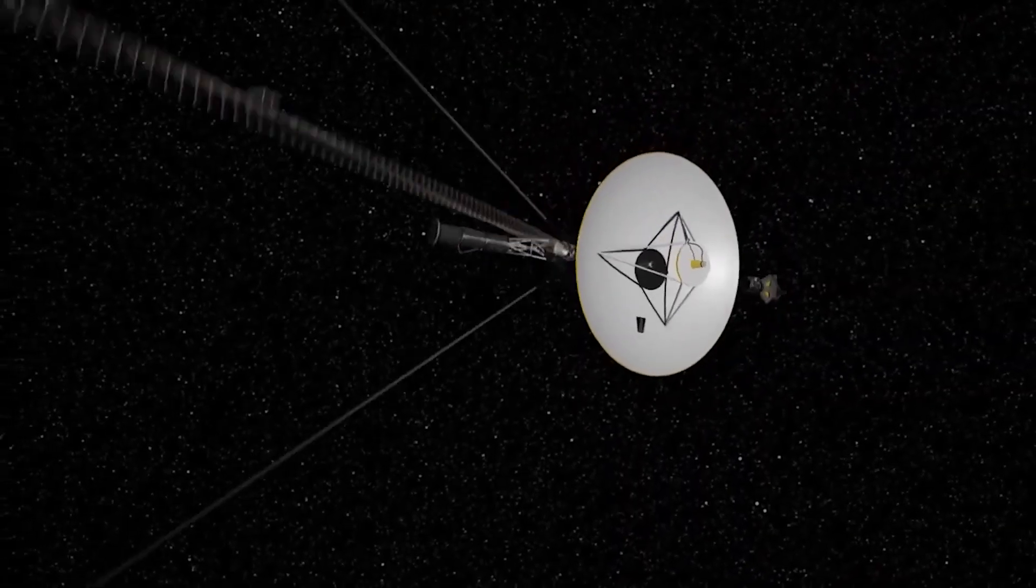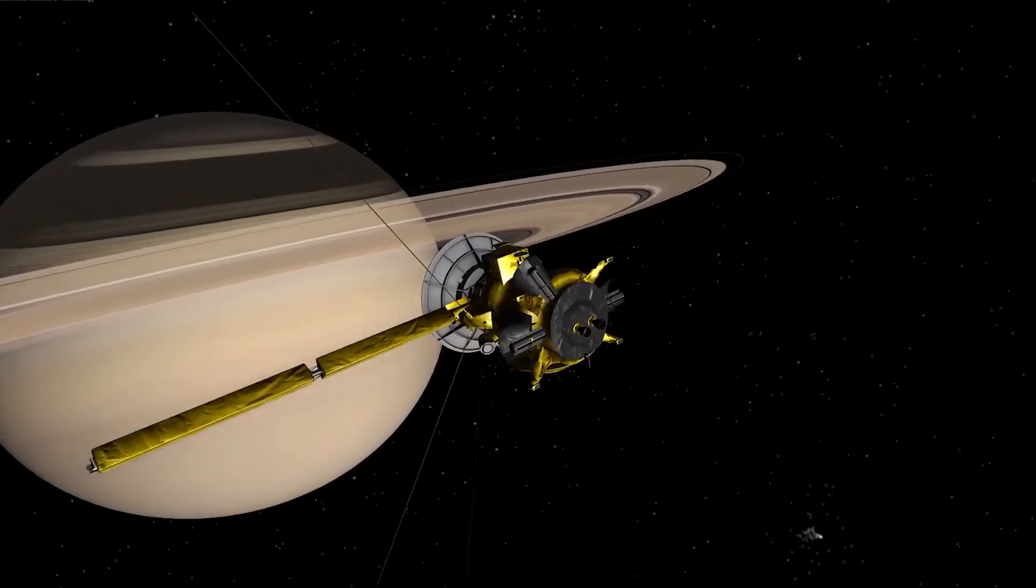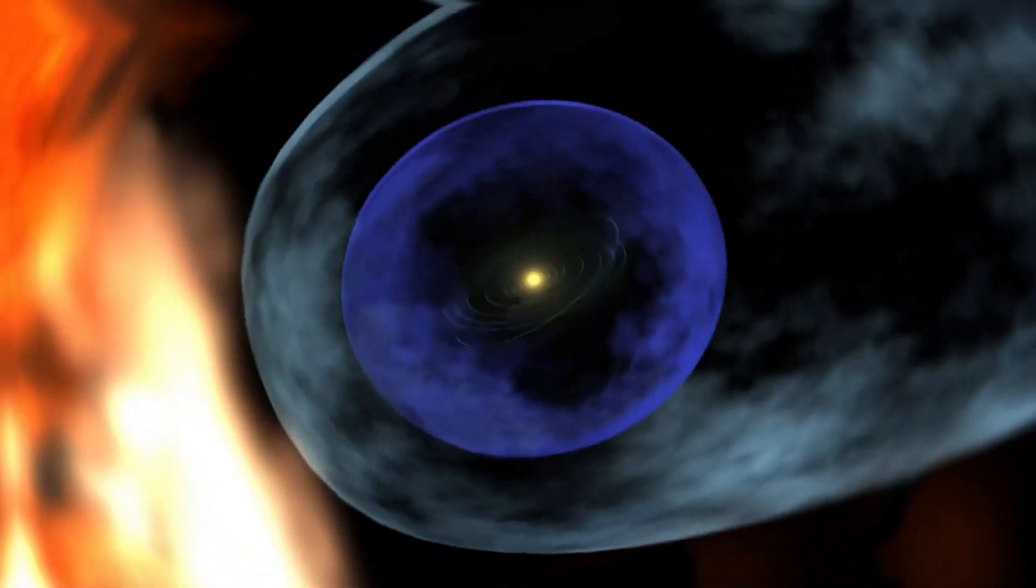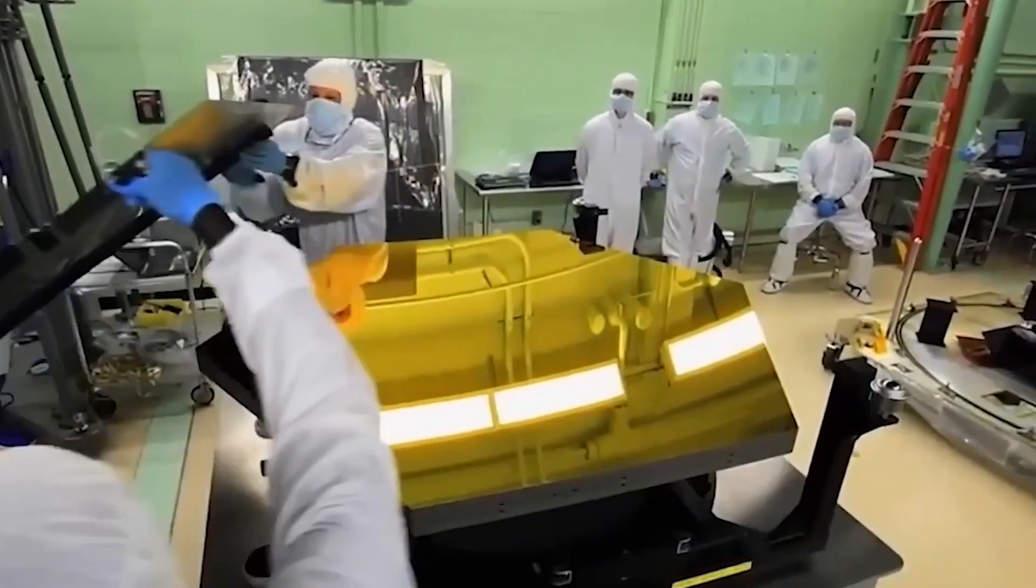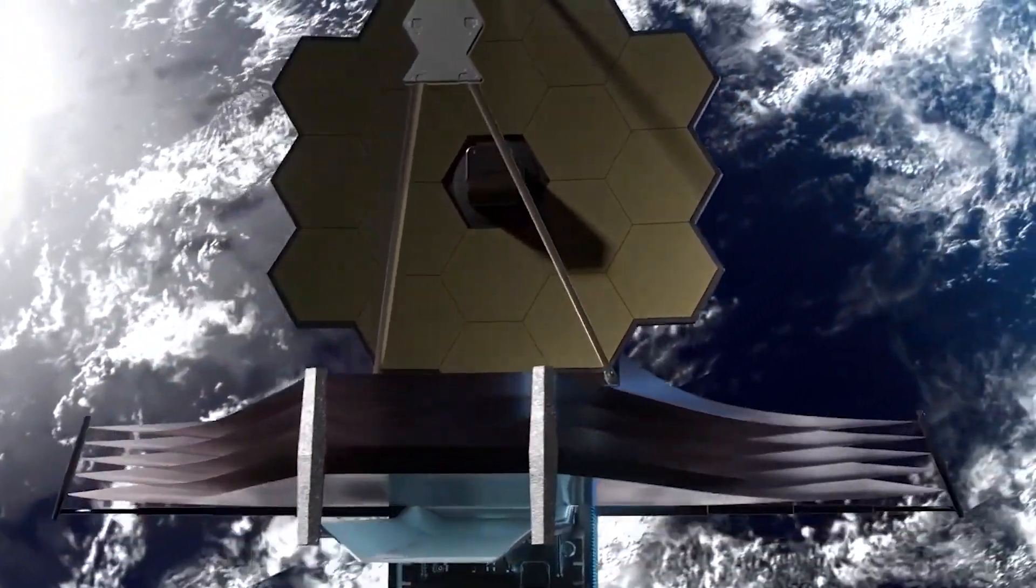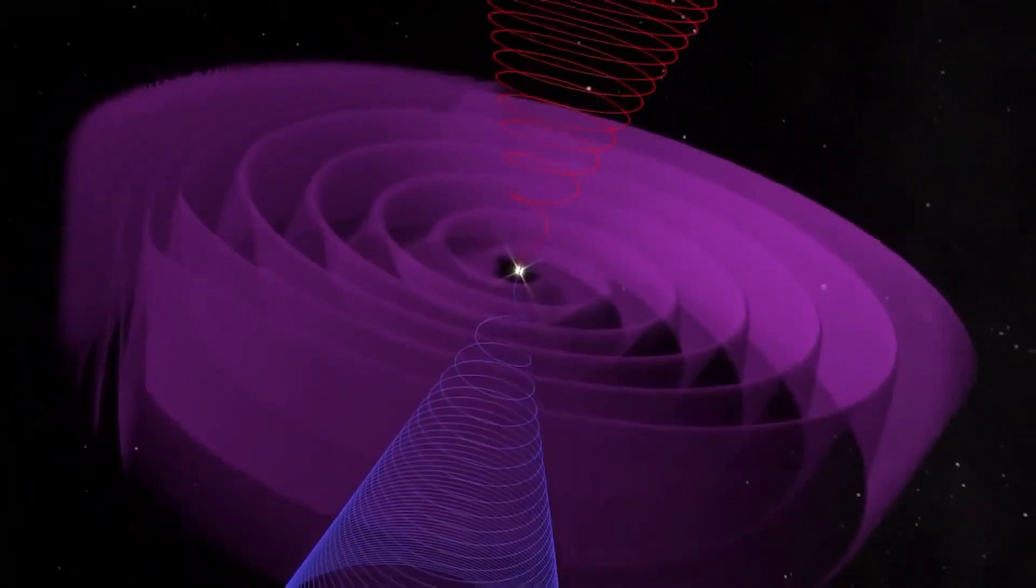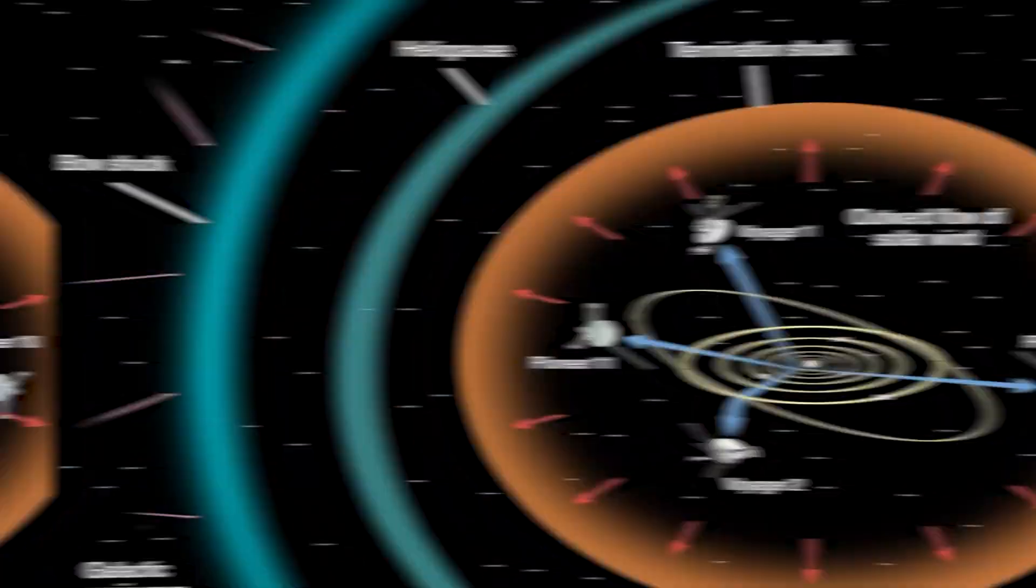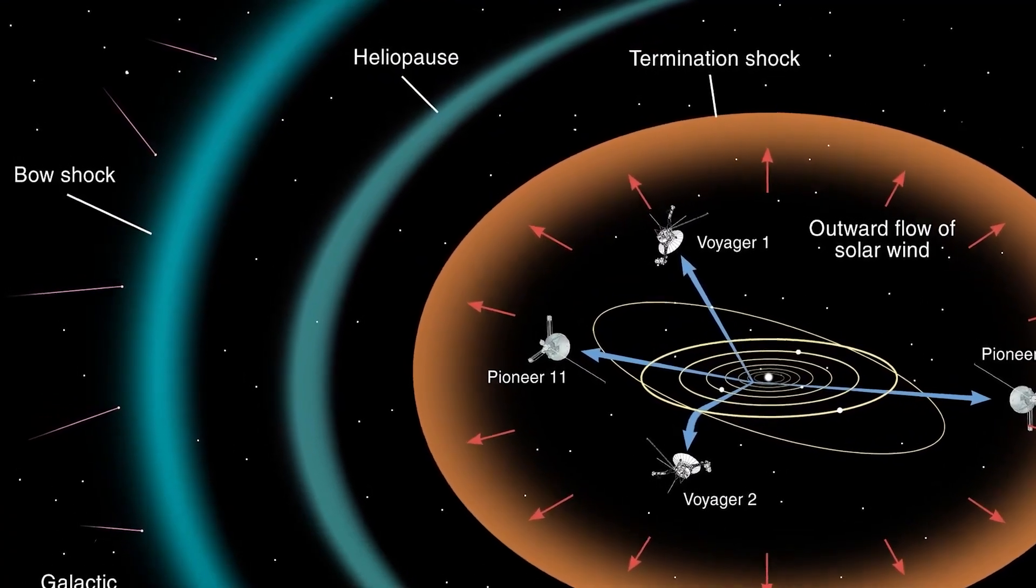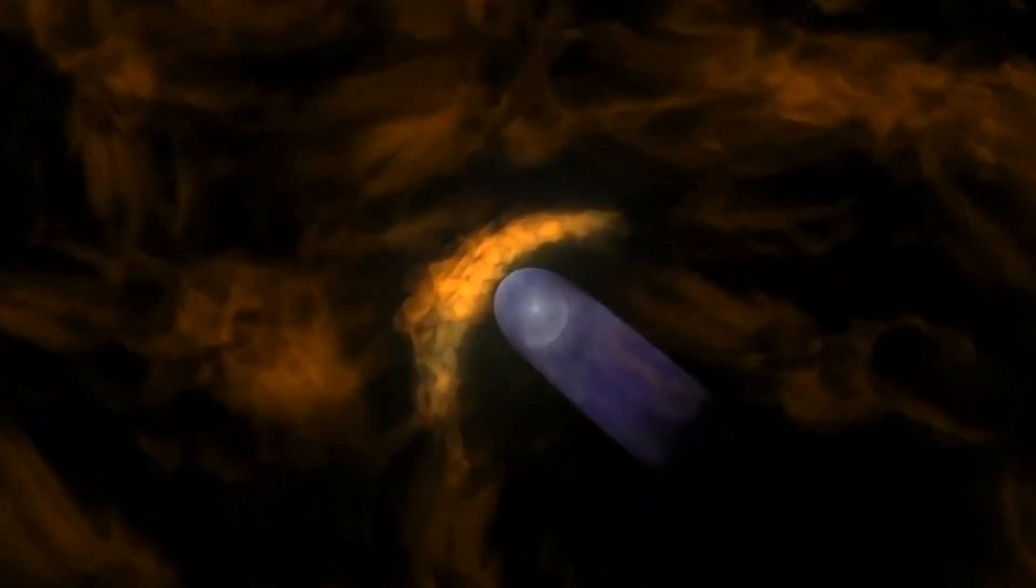Prepare to be captivated as the James Webb Space Telescope, a technological marvel poised at the forefront of human ingenuity, delivers an astonishing revelation that has left scientists and astronomers spellbound. With the unveiling of its latest findings, the telescope has brought to light an awe-inspiring discovery: a staggering 500 unknown objects have materialized within our very own solar system.